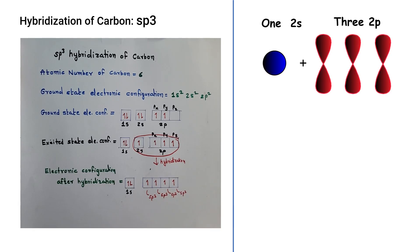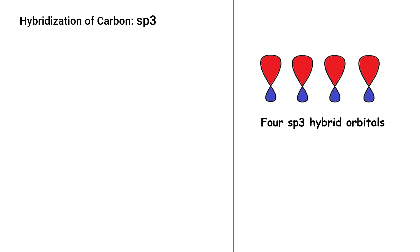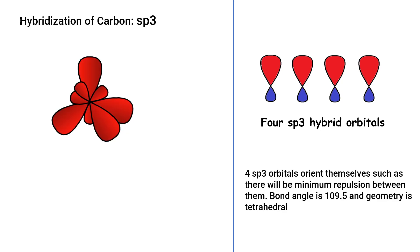In terms of orbital picture, one 2s and three 2p orbitals combine to form four new sp3 hybrid orbitals. These four sp3 hybrid orbitals orient themselves in space such that there is minimum repulsion between them, and the bond angle between these orbitals is 109.5 degrees. The example is methane — the carbon atom in methane is sp3 hybridized. In each of these sp3 hybrid orbitals there is one unpaired electron, so they can form bonds with four hydrogen atoms.